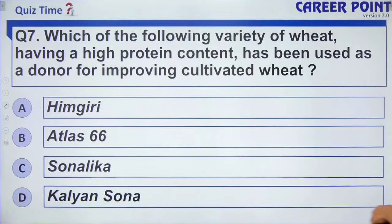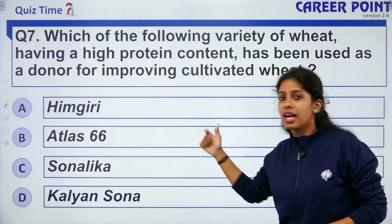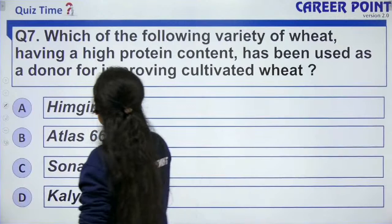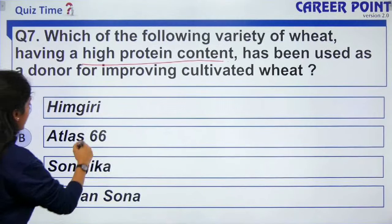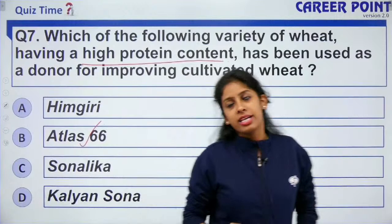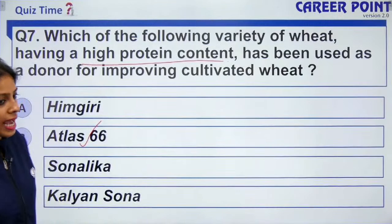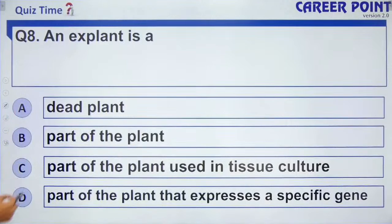Question: which variety of wheat with high protein content has been used as a donor for improving cultivated wheat? The answer is Atlas 66 — it has twice the content of tryptophan and lysine, and is used for biofortification.